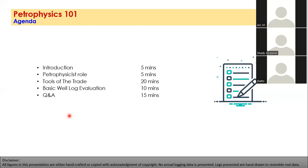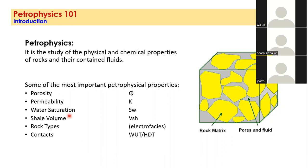The academic definition of Petrophysics is that it's the study of physical and chemical properties of rocks and their contained fluids. But today we're going to simplify things. Looking at this figure — this is a sample of rock from a reservoir. The yellow parts are the rock matrix and the gray areas are the pores and the fluid. In the subsurface, there are only three types of fluids: water, oil, or gas.